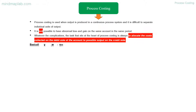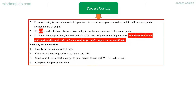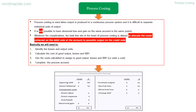We will need to identify the losses and output units, calculate the cost of good output, losses and WIP, use the costs calculated to assign to good output, losses and WIP — that is units multiplied by cost — and then complete the process account. The following is a process ledger account.